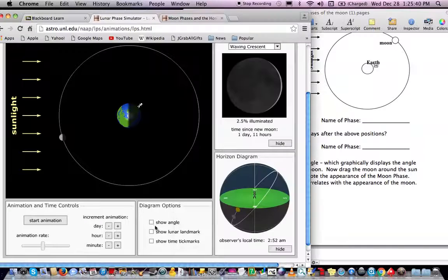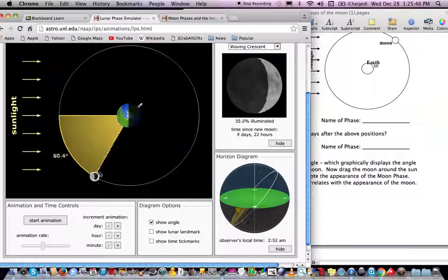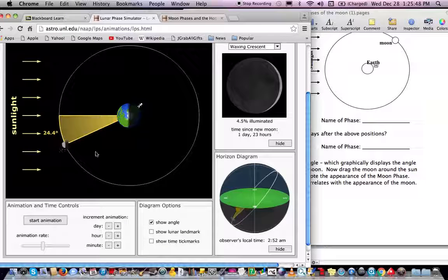The next thing it asks you to do is show the angle, and you can click on the show angle here, and then you can move the moon around to see what happens to the illumination as you change the angle.